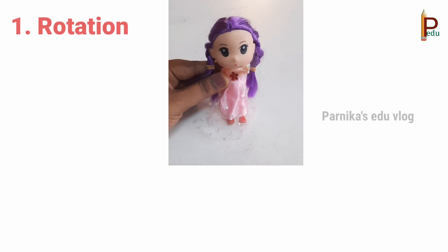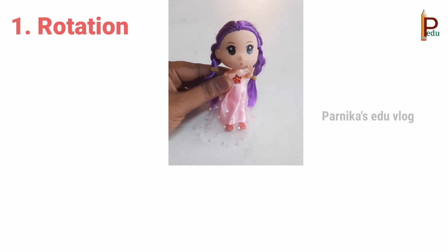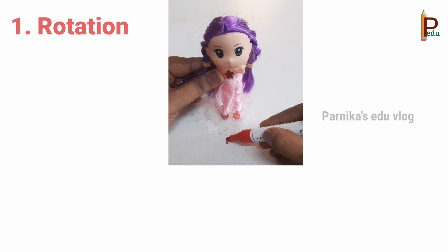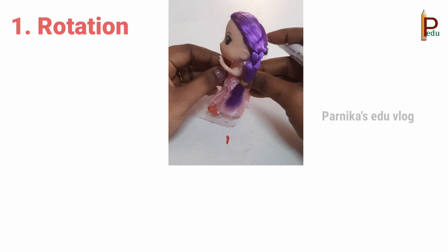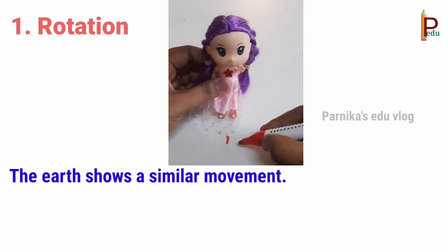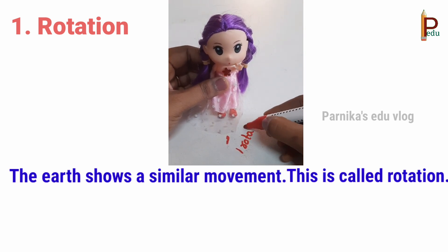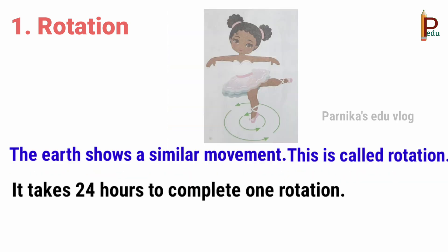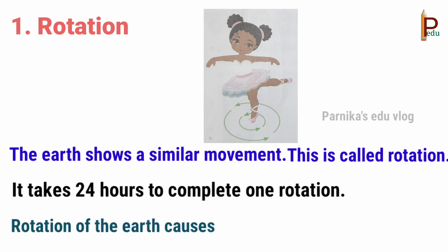Tina is a dancer. Her dance form shows different kinds of movements. Tina is standing in the same position and turning around. The Earth shows a similar movement — this is called rotation. It takes 24 hours to complete one rotation. Rotation of Earth causes day and night.